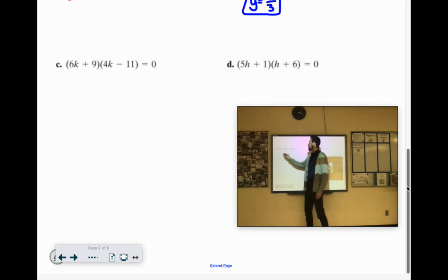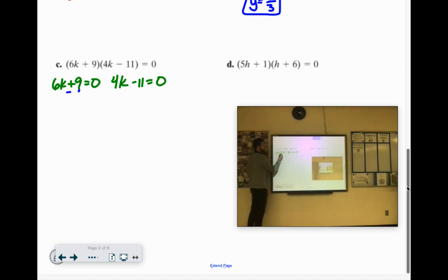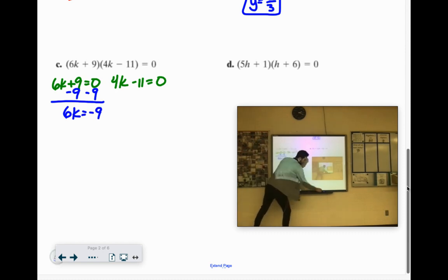C. Set up your two equations. 6k plus 9 equals 0. 4k minus 11 equals 0. Let's do the 6k plus 9 first. Subtract the 9. 6k equals negative 9. We'll divide by 6.